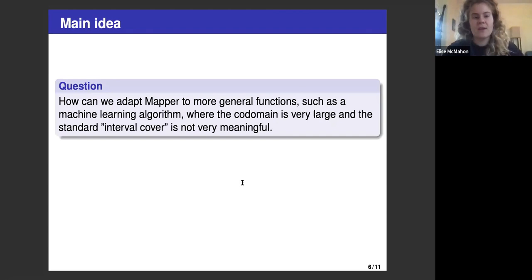This leads us to the main question that I want to address: how can we adapt Mapper to more general functions, such as a machine learning algorithm, where the codomain is very large and the standard interval cover is not very meaningful?